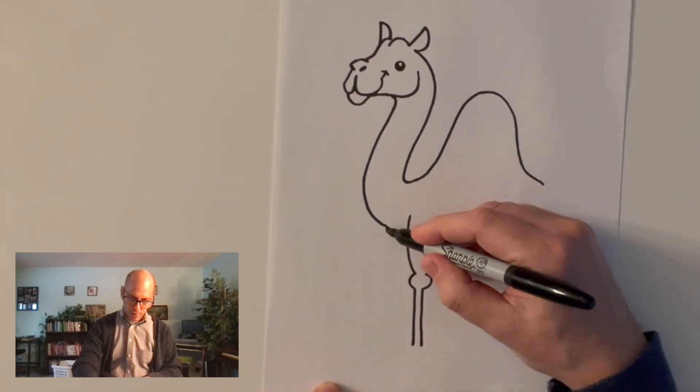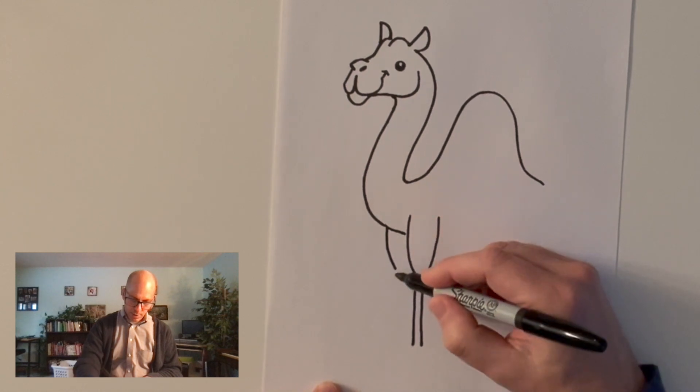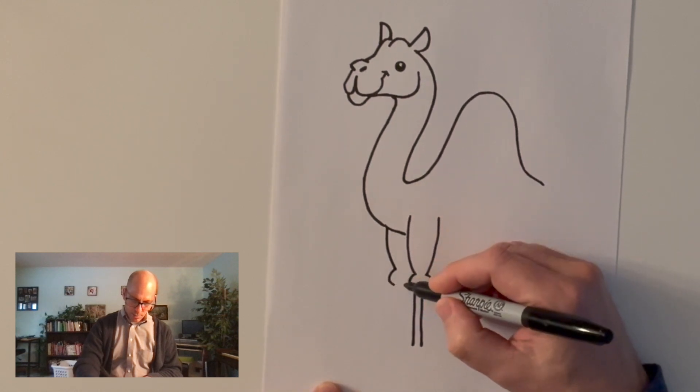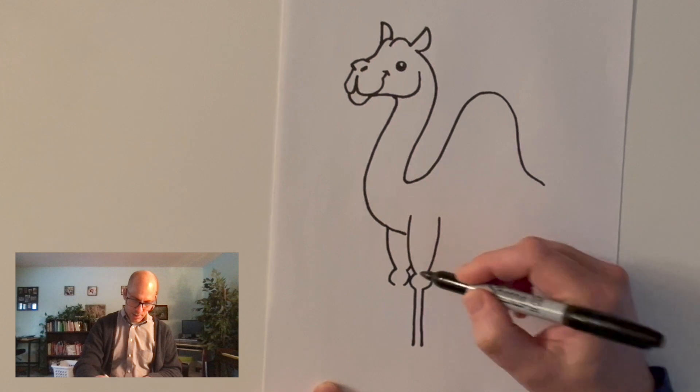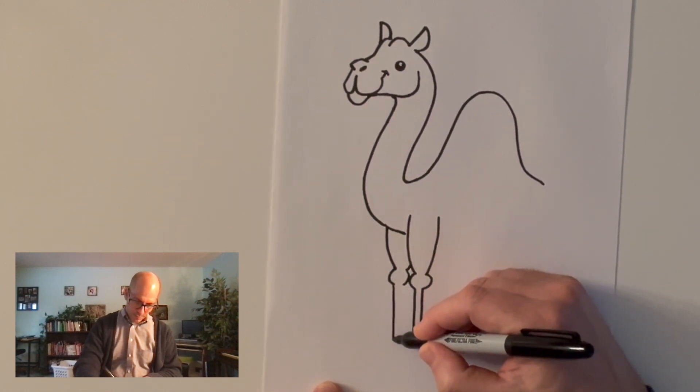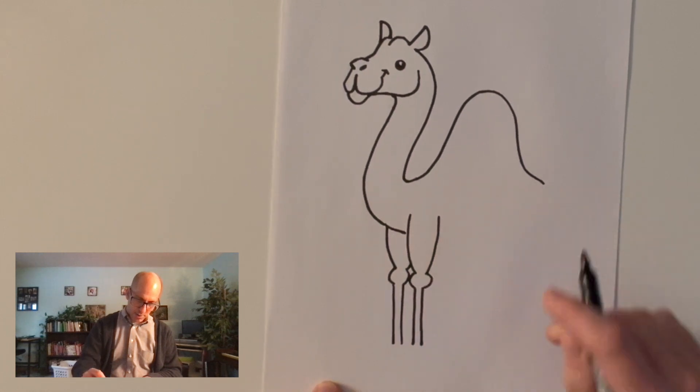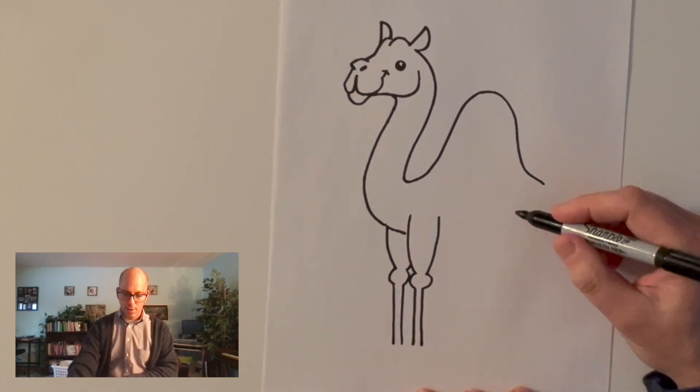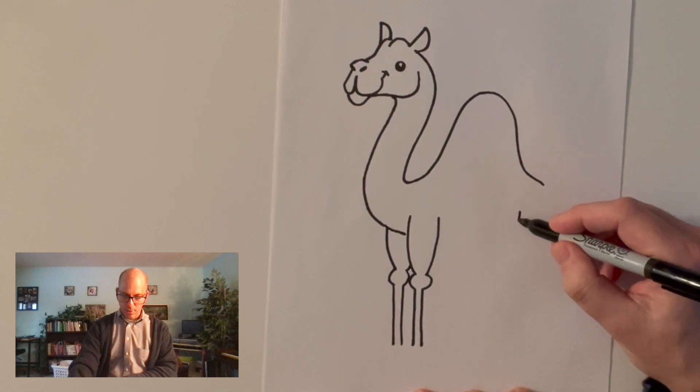I'll come on over here and do the same thing on the other side, behind that first leg. Camels have these funny knees that they use to sit down on. They kneel. That's how they use those knees.